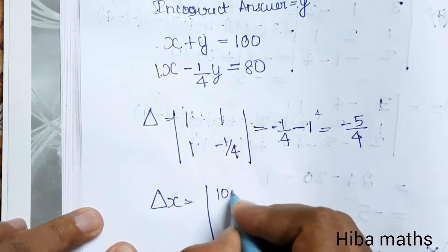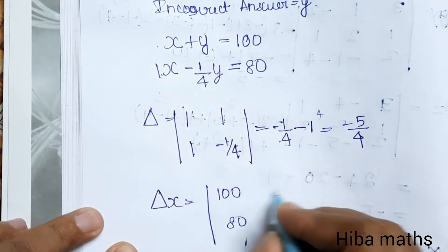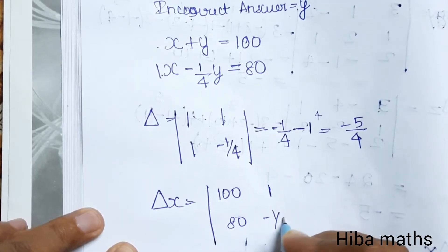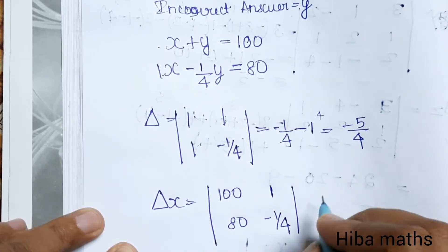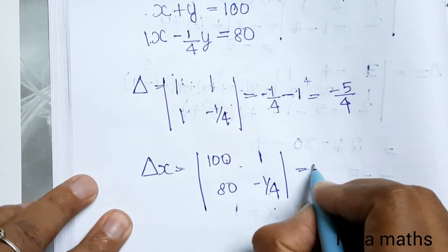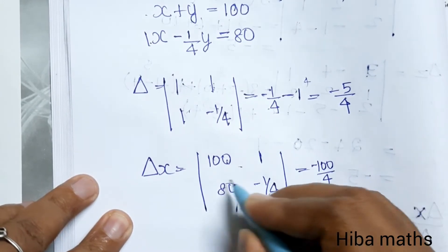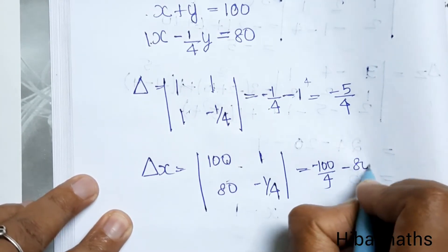Then x is 80. This is 1 minus 1/4. 100 into -1/4 is -100/4, plus 80 is -80.